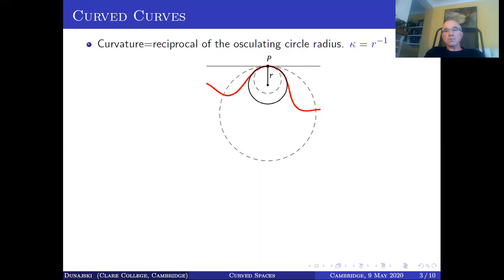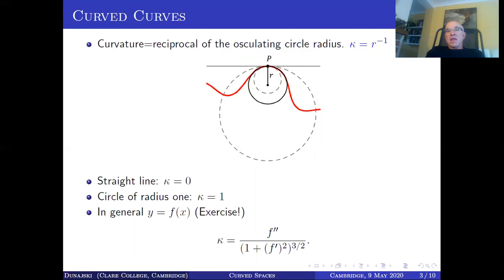Well, for example, if the curve we want to measure a curvature of is a straight line, then the radius of the osculating circle or in fact any other tangent circle would be infinite. We can think of a straight line as a limiting case of a circle with infinite radius. So the curvature of the straight line is zero. If the curve is itself a circle of say radius one, then its curvature is equal to one and it's the same at any of its points.